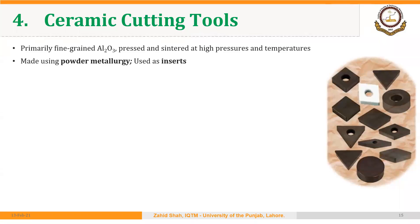Continuing with our discussion on cutting tool materials, the fourth material used to make cutting tools is ceramics. The most common material among ceramics is aluminum oxide. This is primarily a fine-grained material that is pressed and sintered at high pressures and high temperatures. These cutting tools using ceramic material are made using powder metallurgy, and they are made in the shape of inserts, as we saw for carbide tools.